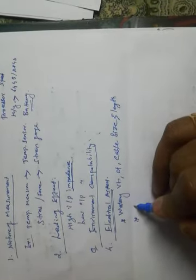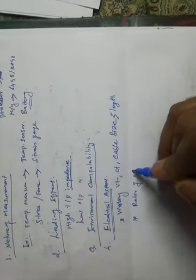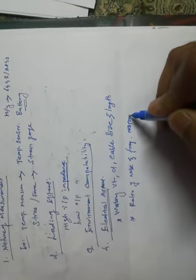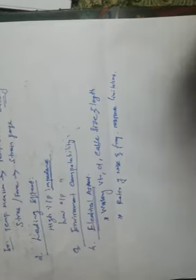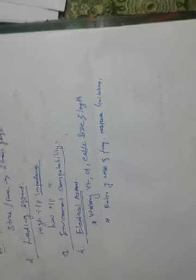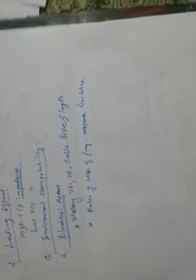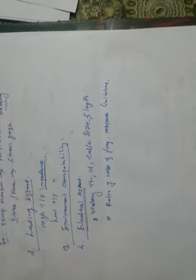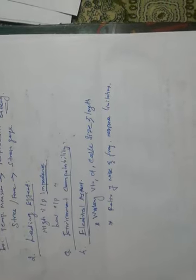Another important one is noise and frequency response limitation. You have to select the transducer having very less noise and proper frequency response. If the frequency response is poor, the output of the transducer may be malfunctioned and you will not get an exact output.